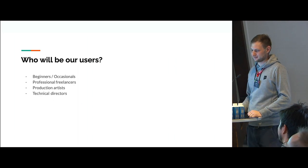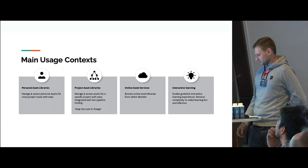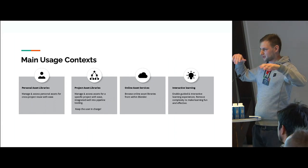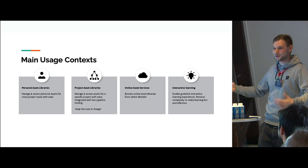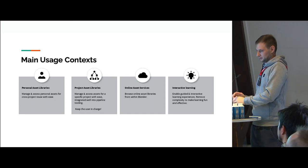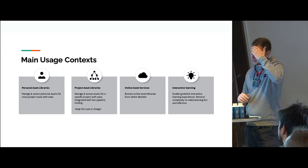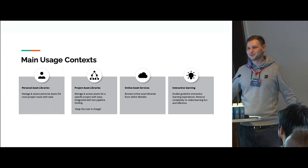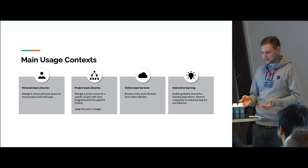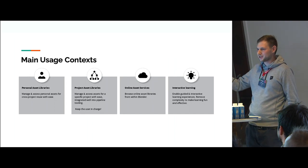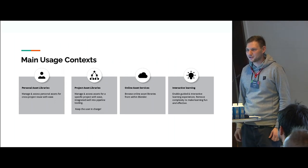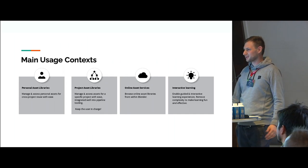This may be one of the most important parts of this introduction to the product. I came up with four contexts, and one thing I found is: you talk to ten different people about how asset stuff should work in Blender, and they all say 'yeah it's obvious, you just do this and this' — but they each describe something totally different. People have very different understandings of what they want from this asset system.